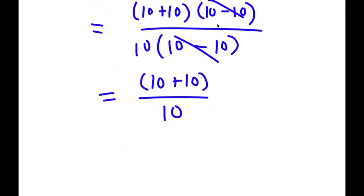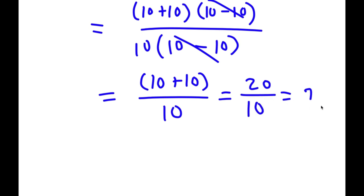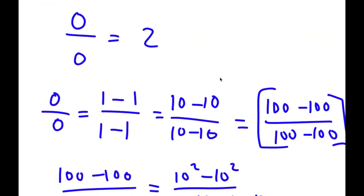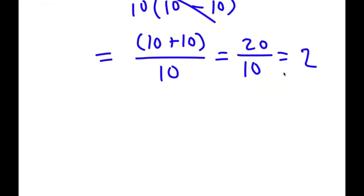So now I'm going to be left with 10 plus 10 over 10. Now, 10 plus 10 is the same thing as 20, so I have 20 over 10, and 20 divided by 10 is simply 2. So as you can see, I just proved that 0 divided by 0 is equal to 2.